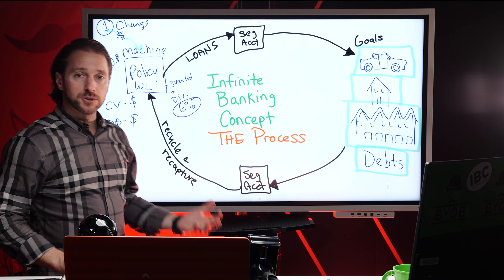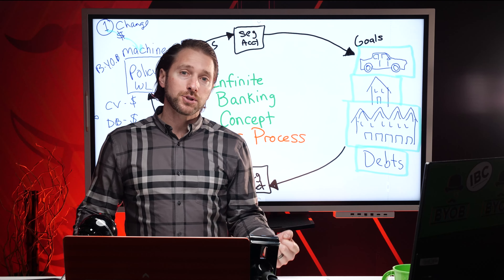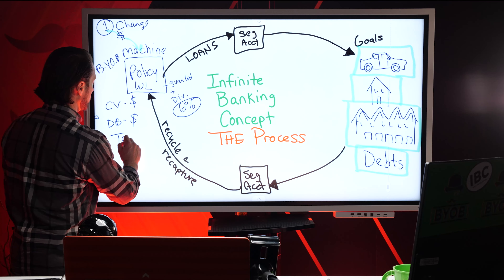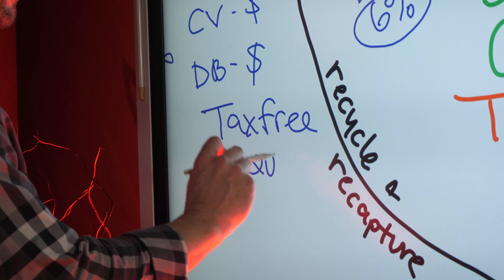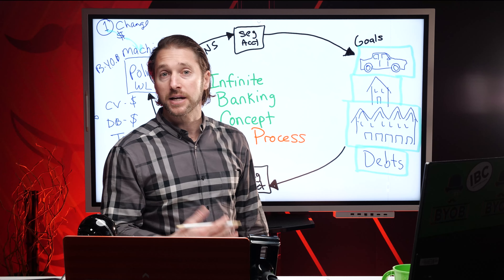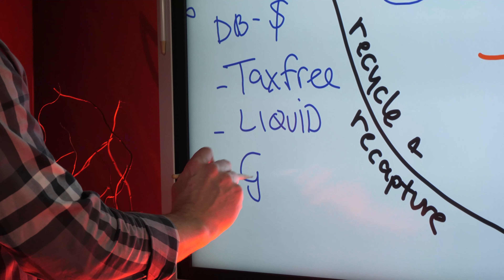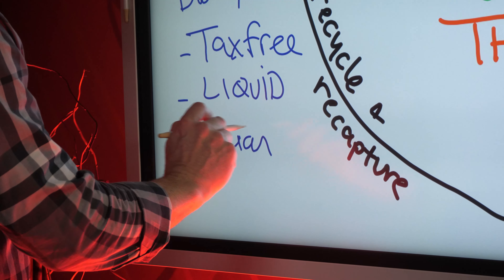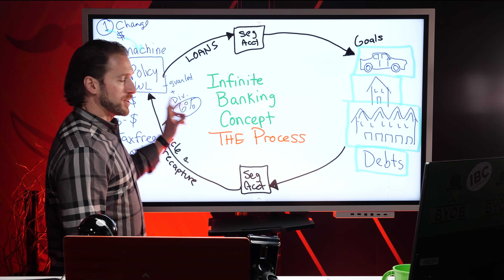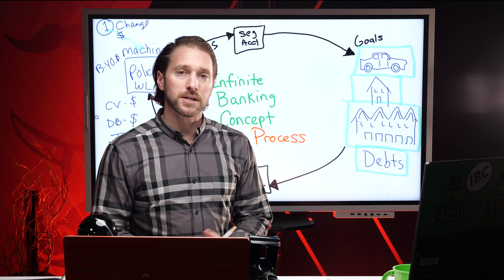Unless you can find a bank account that offers guaranteed growth in excess of 6%, allows that money to grow tax-free, and provides liquidity — the money is not 100% liquid in the first year, but after that it becomes 100% and then some — this vehicle is unique. And here's the other big thing: it is guaranteed, and it is the only vehicle that allows you to take money out and not interrupt that guaranteed interest and the dividends.